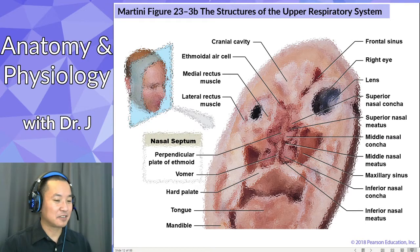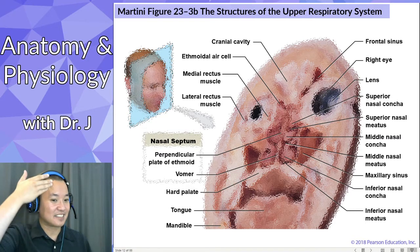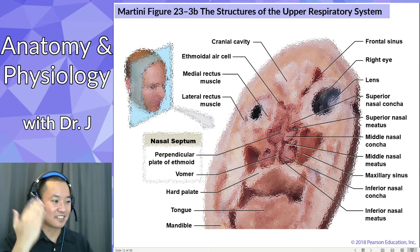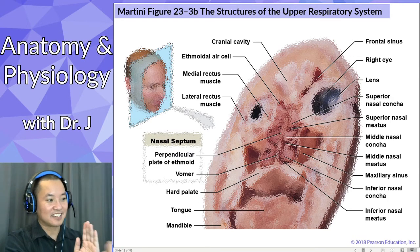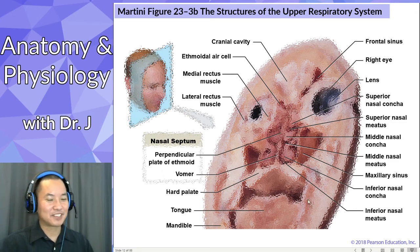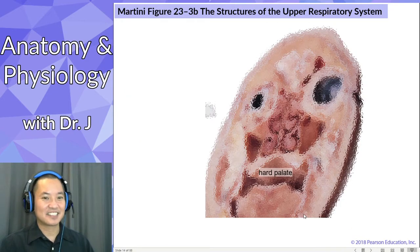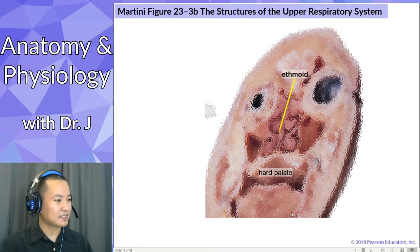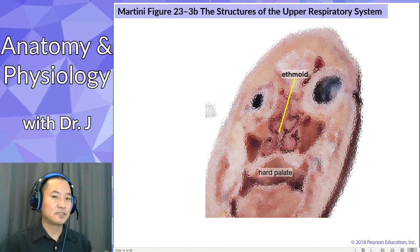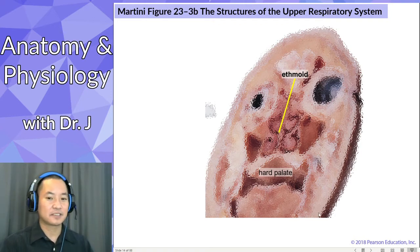They took someone who donated their body and made a slice this way — that's how they got this. You're looking at someone's face from the other direction. I don't know what their policy is on things that are graphic, but I'm just being very cautious here. If you want to see the full thing, it's on your slides. This is why I like this picture — not in terms of aesthetics, but it shows you a lot of the internal structures of your nasal cavity. This is why it's a really useful slice, even though it's very graphic.